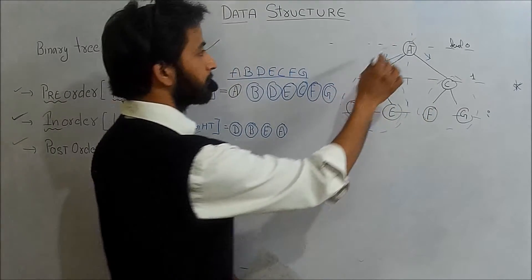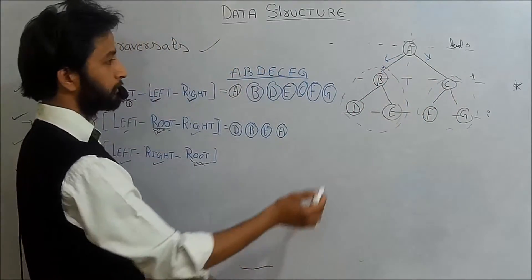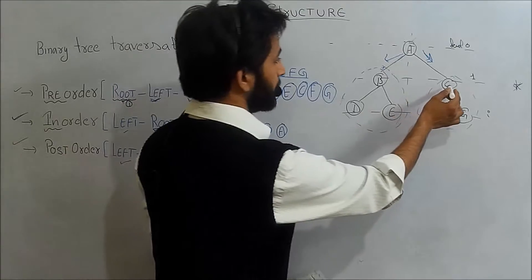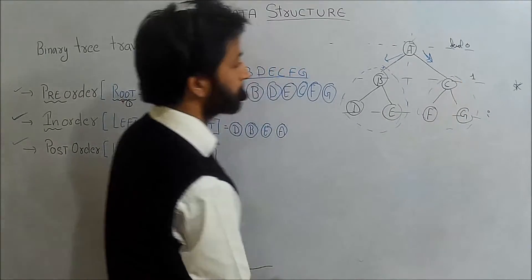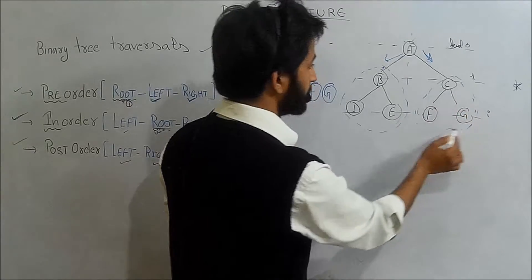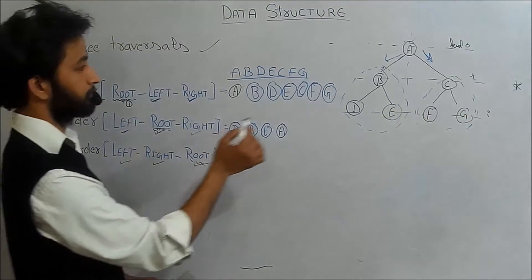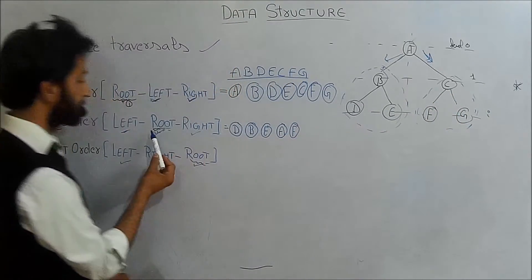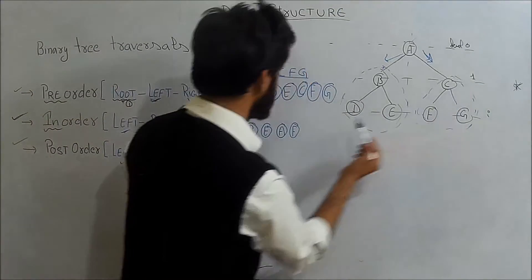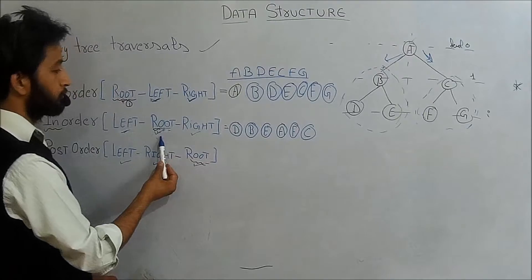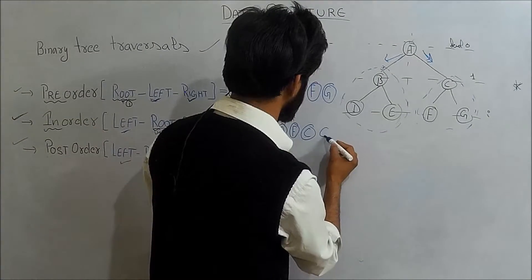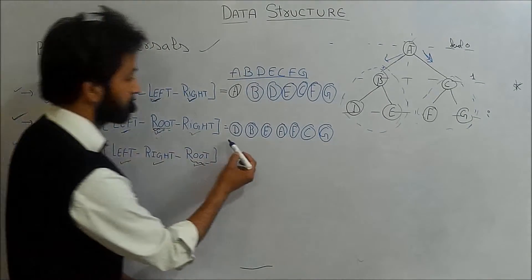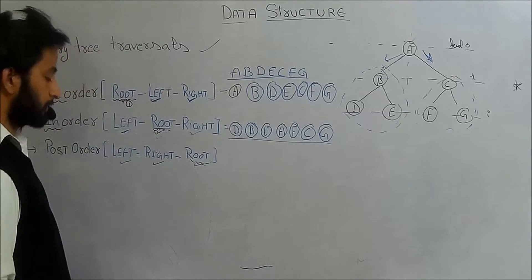After the root, we move to the right subtree C, F, G. We take the left first which is F, then the root C, then the right element G. So the in-order traversal of the given binary tree is D, B, E, A, F, C, G.